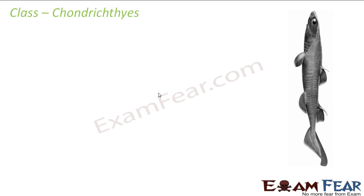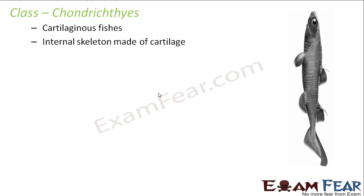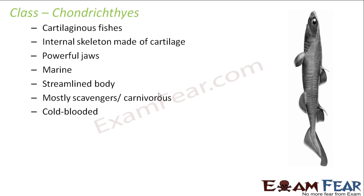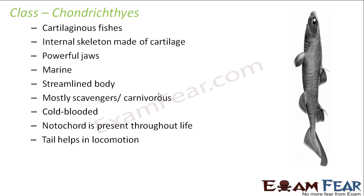Chondrichthyes are the cartilaginous fishes whose internal skeleton is made up of cartilage. Powerful jaws are present. They are mostly marine fishes with a streamlined body which helps in movement within water. They are mostly carnivorous or scavengers. They are cold-blooded and cannot regulate their body temperature. Notochord is present throughout their life, and the tail helps in locomotion.